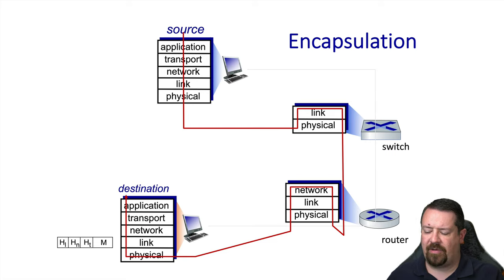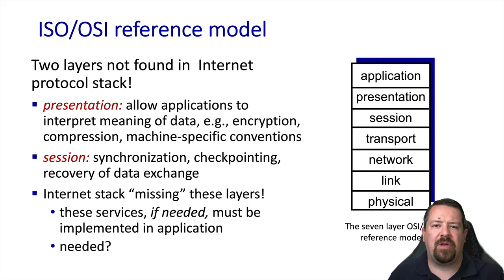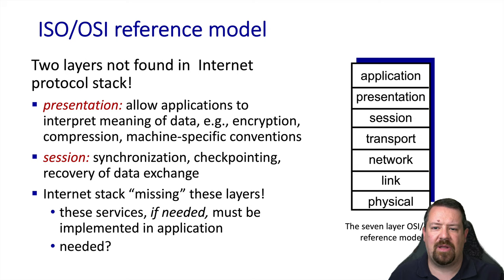When the entire frame reaches the destination, it goes through the reverse process where each layer reads its own header and removes it as it works its way up the stack. You may also hear of the OSI reference model, or the seven layer model. This was an early standard designed to represent all of the services potentially needed by different applications. However, the internet model was somewhat simplified from this and so it doesn't represent two of the layers: the presentation and the session layer. If a particular application needs these layers, that application will have to implement them.